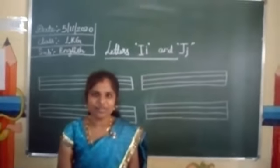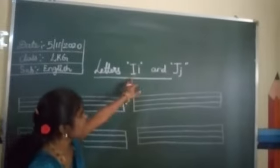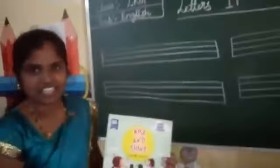Hello students. Very good morning to all. Today I am going to take letters Capital I, Small I, Capital J and Small J. All of you are having rise and shine textbook? Open the page number 24 and 25. See here.